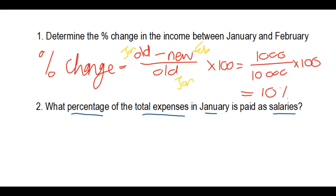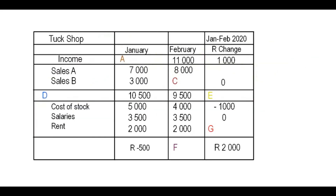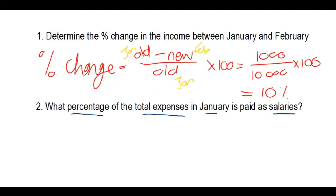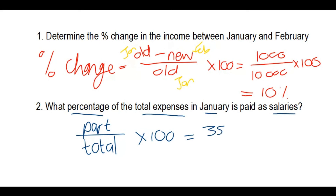The next question: what percentage of total expenses in January is paid as salaries? Looking at January, the salary amount is 3,500 rand and total expenses were 10,500 rand. To find a percentage of a part to a whole: part divided by total multiplied by 100. So 3,500 divided by 10,500 gives you 33%.